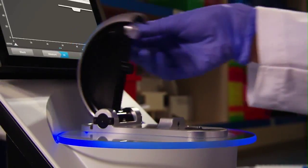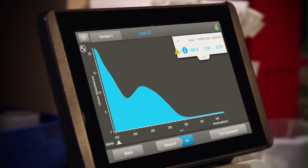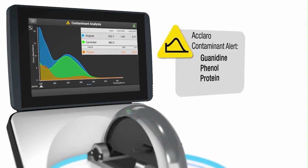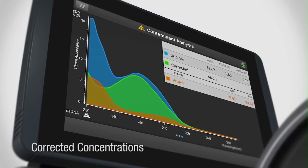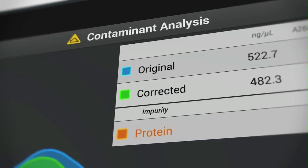ECLARO data analysis ensures that your sample is accurately qualified and quantified. ECLARO identifies sample contaminants, automatically providing a corrected concentration value so you can avoid spending days troubleshooting failed experiments.